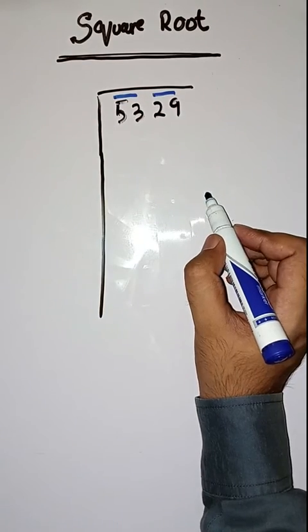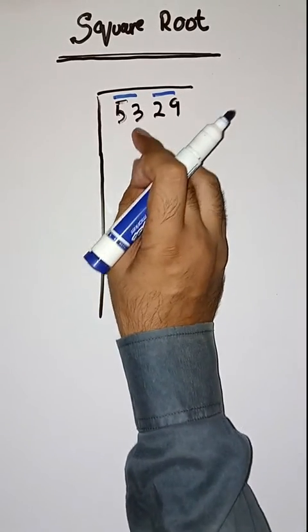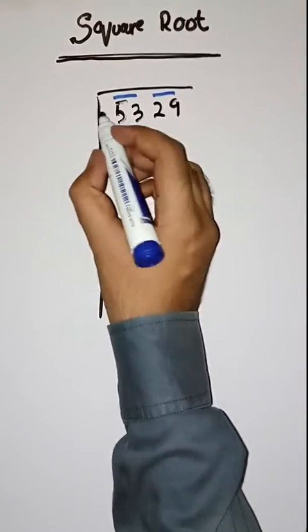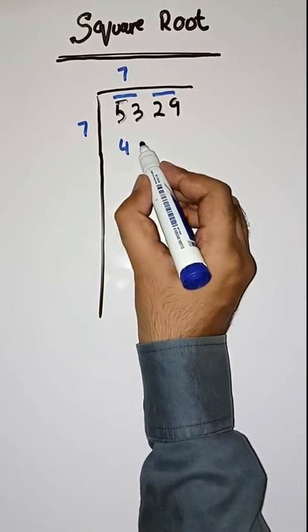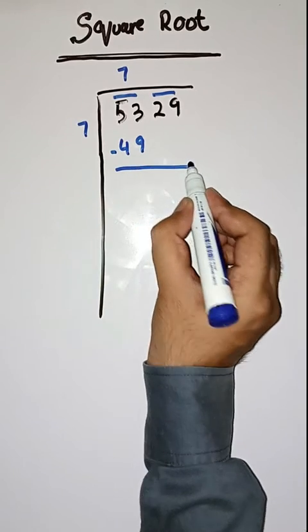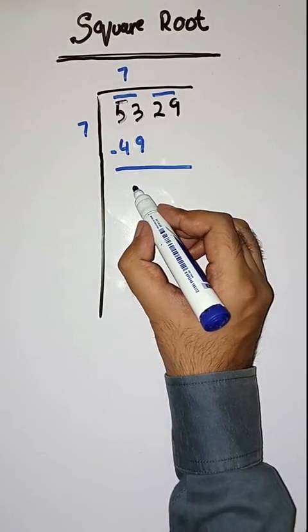Got it? Then, according to this pair, first we have to solve 53. We take a number 7. 7 times 7 is 49. We will minus. 53 minus 49 is equal to 4.